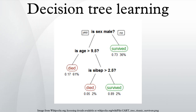Decision trees used in data mining are of two main types. Classification tree analysis is when the predicted outcome is the class to which the data belongs. Regression tree analysis is when the predicted outcome can be considered a real number. The term classification and regression tree analysis is an umbrella term used to refer to both of the above procedures, first introduced by Briemann et al. Trees used for regression and trees used for classification have some similarities, but also some differences, such as the procedure used to determine where to split.